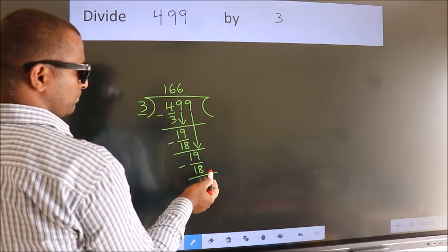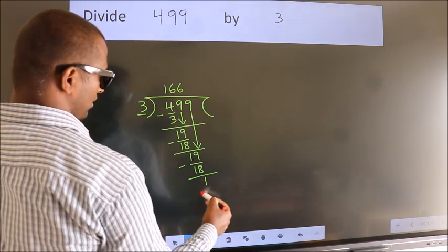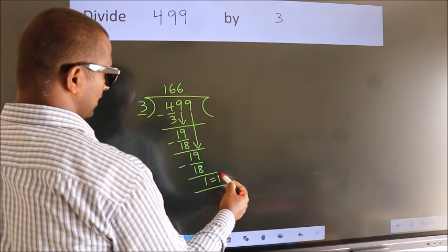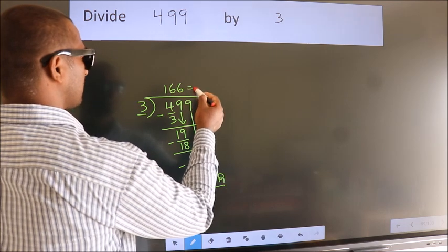No more numbers to bring down. So we stop here. This is our remainder. This is our quotient.